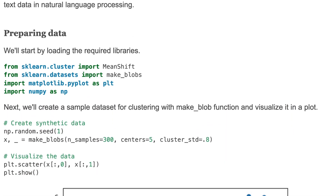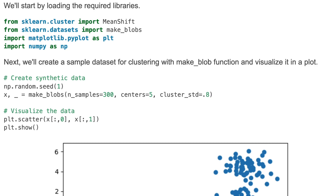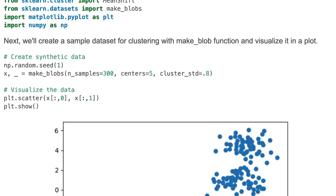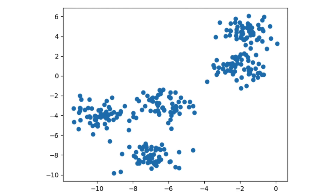We'll start by loading the required libraries for this tutorial. Here we use scikit-learn, cluster datasets, Matplotlib, and NumPy libraries. First we'll create a sample dataset for clustering with the make_blobs function and visualize it in a scatter plot. Here we generate the synthetic data and visualize it in a plot — this is the target data for us to cluster.